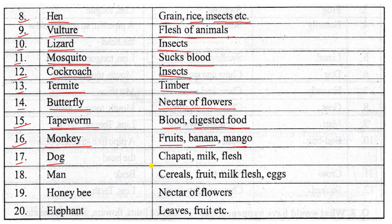Number seventeen: dog — chapati, milk, flesh — omnivorous. Number eighteen: man — selects fruit, milk, flesh — omnivorous.